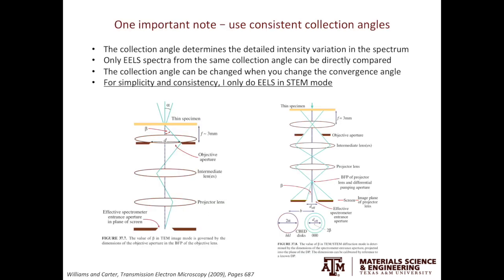When we acquire EELS spectra, in many cases we are doing comparisons. To make sure the EELS spectra are directly comparable, we have to ensure the collection angle beta is consistent in all the data. This is because the detailed intensity variation in the spectrum can be affected by the collection angle beta. To avoid this complication, what I usually do is only acquire EELS in STEM mode. Although in general you can do EELS in both imaging mode or diffraction or STEM mode, if all your EELS spectra are acquired in STEM mode, the convergence angle is consistent, the collection angle is consistent, and the EELS spectra are directly comparable.